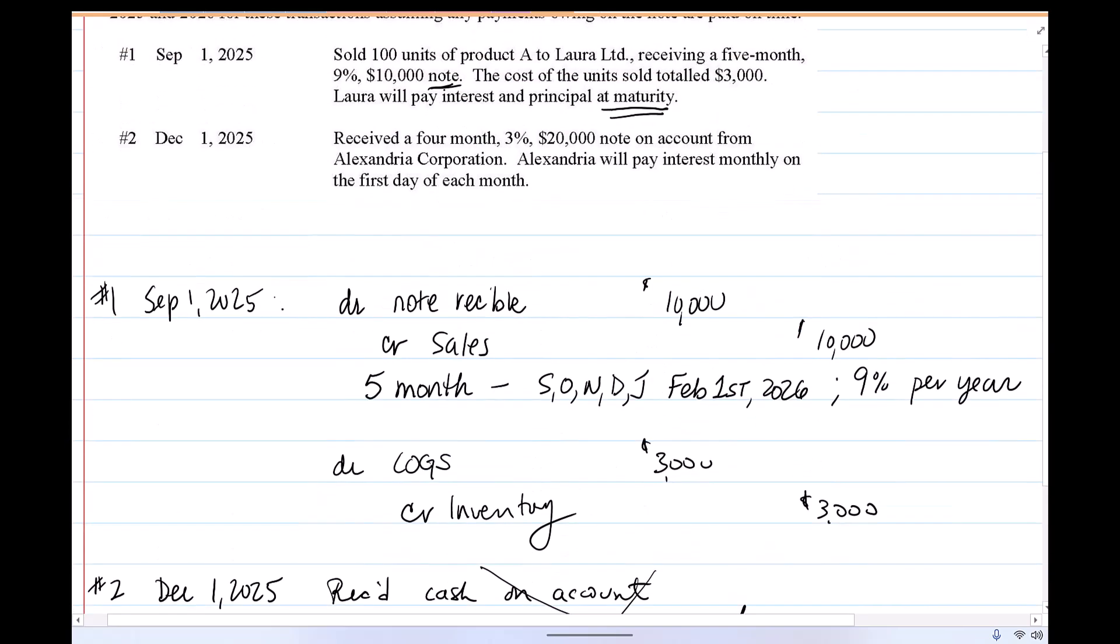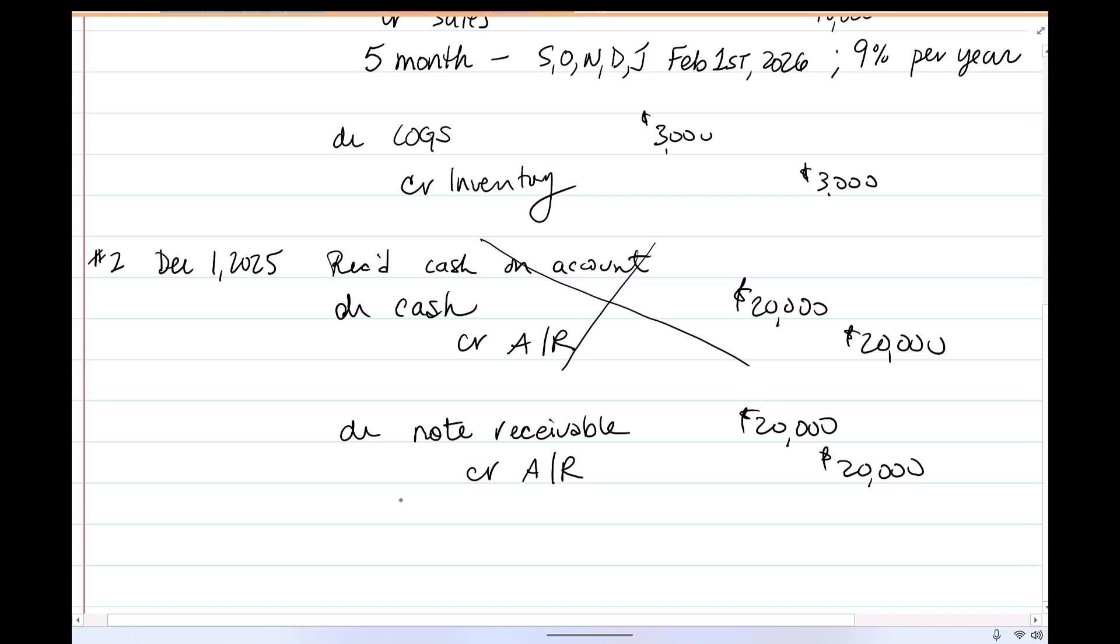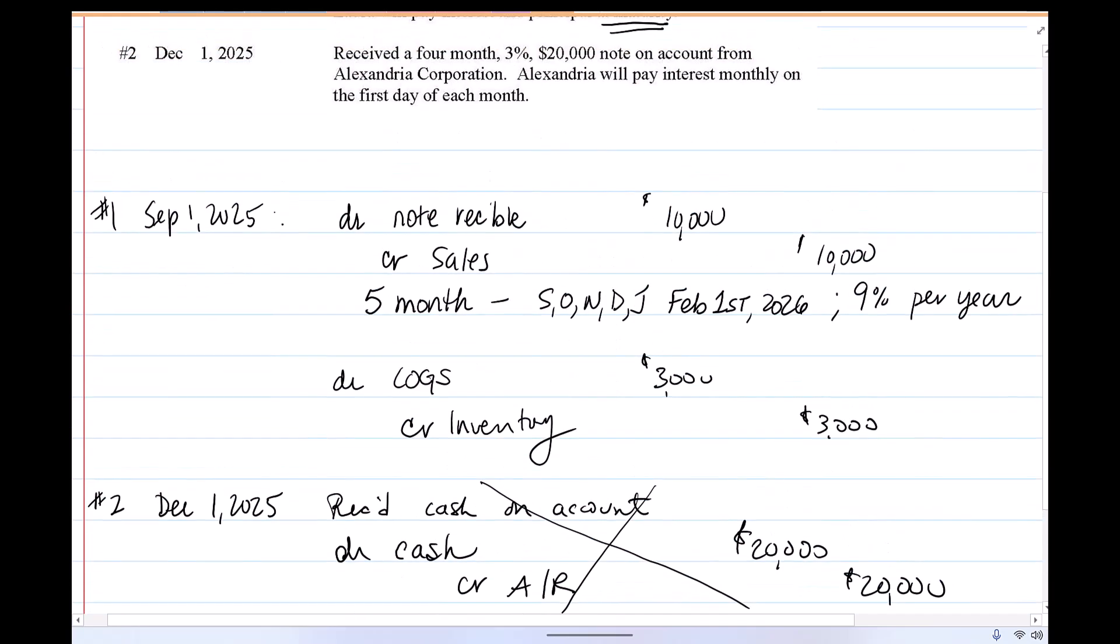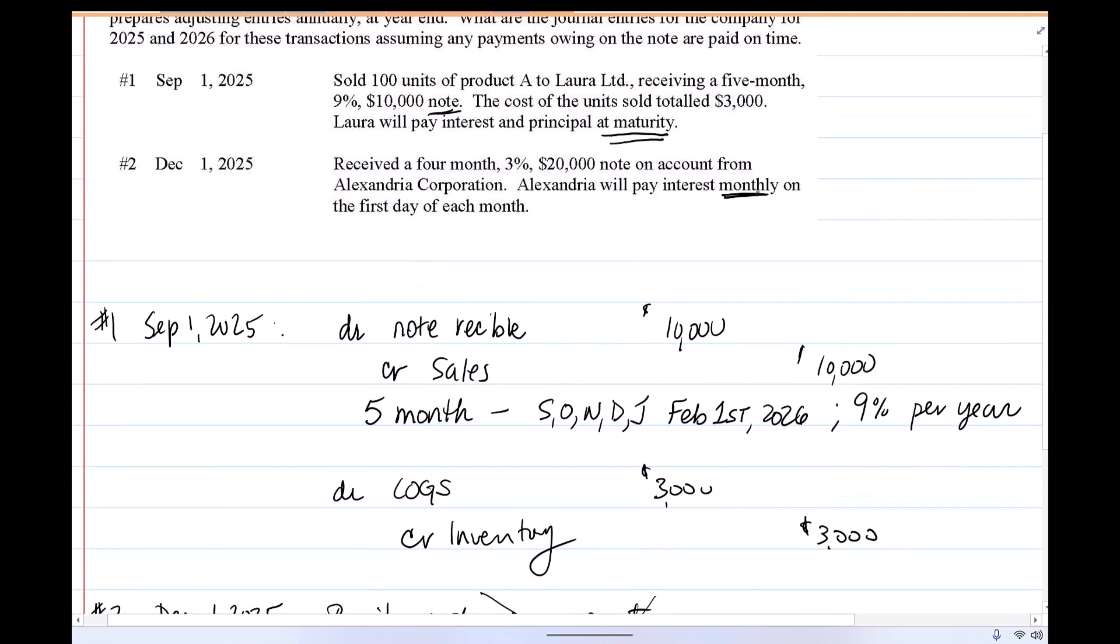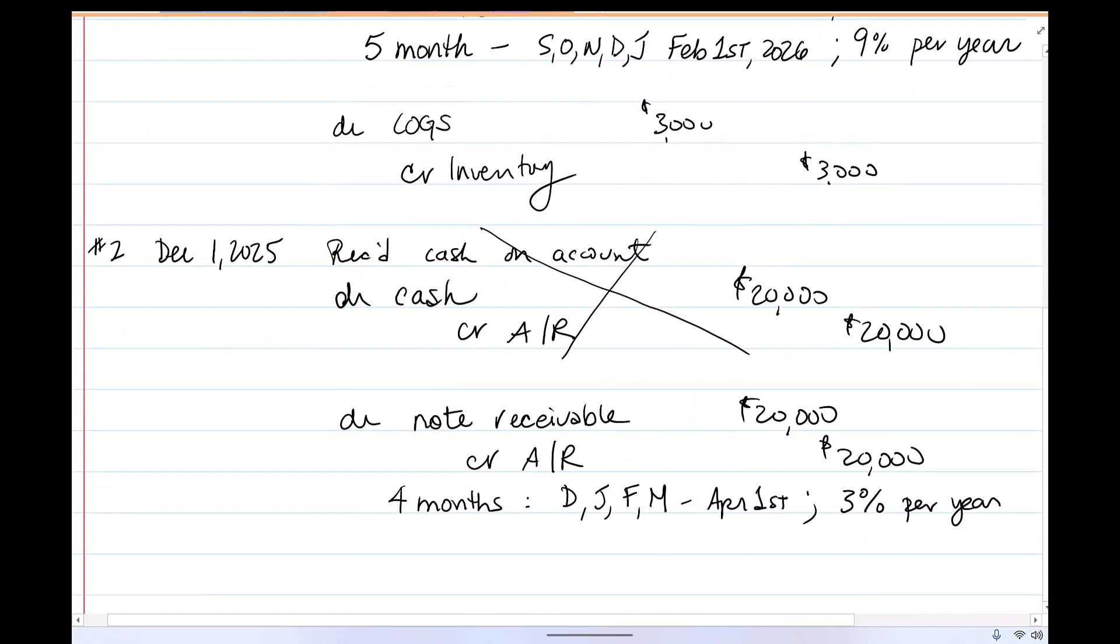This note is 3% for four months. So four months, we're at December 1st, so that'll be December, January, February, March. So they're going to pay us on April 1st. And the interest rate for this note is 3% per year. So not 3% for the four months, 3% per year. So they're going to make payments monthly on the first day of each month, which means the first interest payment will be due January 1st, 2026.